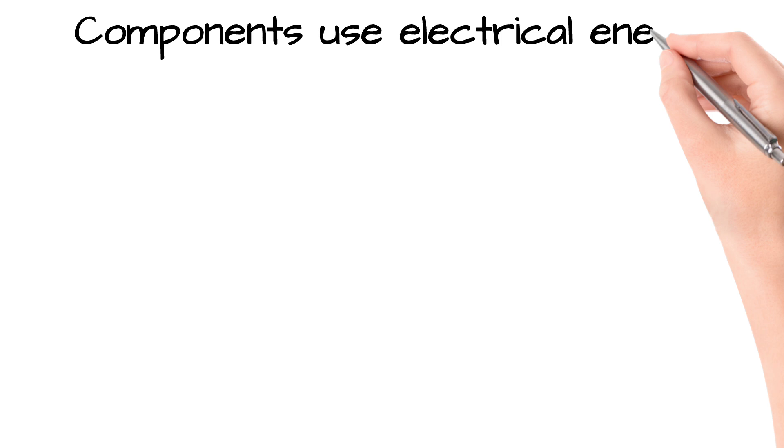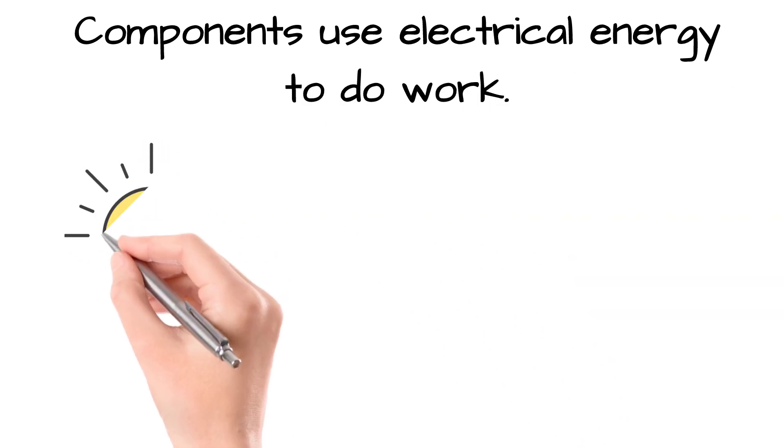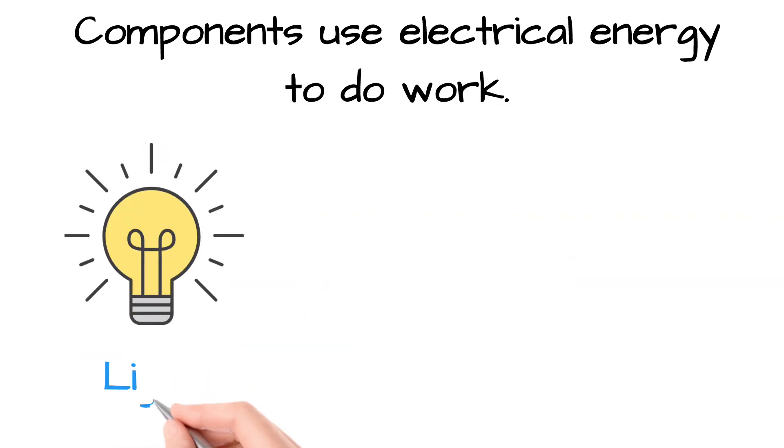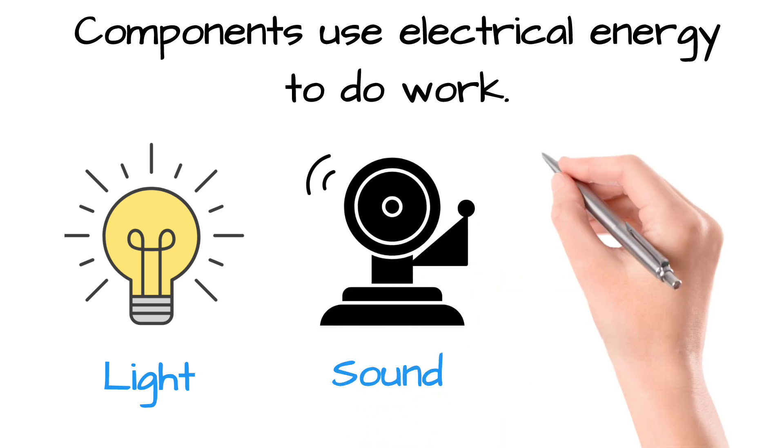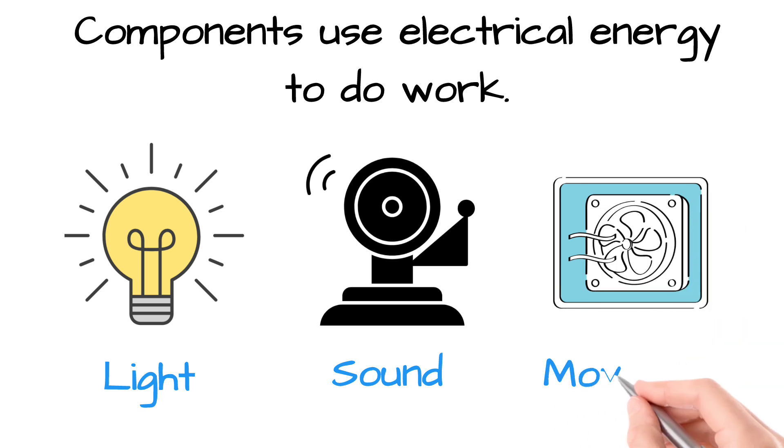In a circuit, components are the parts that use electrical energy to do useful work. A bulb changes it into light, a buzzer turns it into sound, and an electric motor changes it into movement. Each component plays a special role in using the energy from the circuit.